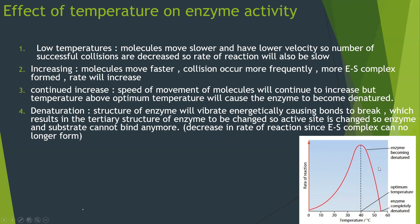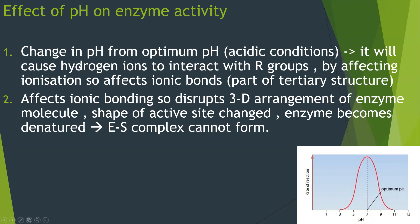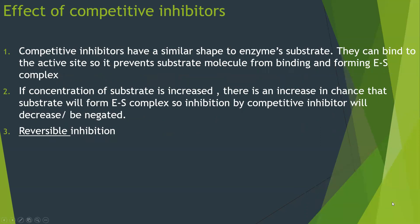For pH effects, the optimum pH is where the rate of reaction is maximum. Changing pH from optimum — for example, making conditions too acidic — causes hydrogen ions to interact with R groups, affecting ionization and disrupting ionic bonds that are part of the tertiary structure. This alters the 3D arrangement of the enzyme and changes the shape of the active site, denaturing the enzyme. Any change from optimum pH — whether more acidic or more basic — causes denaturation.